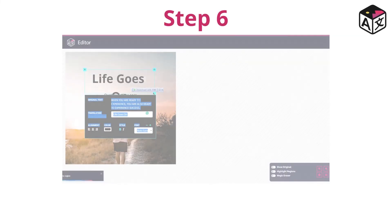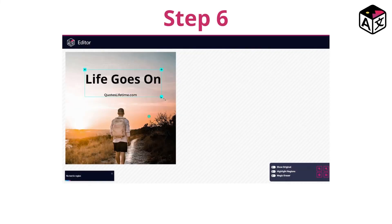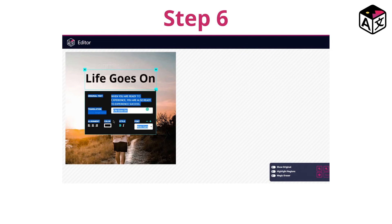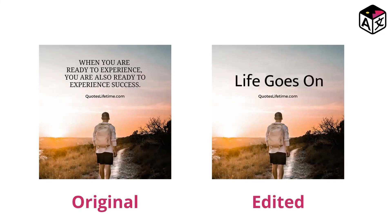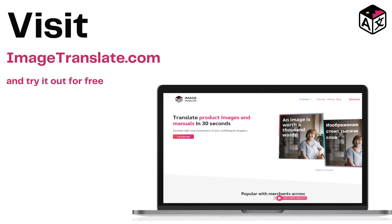Now you can edit the image in the way you want. With Image Translate you can also drag and move the text anywhere in the image and customize the layout and look. The Advanced InPainting AI fixes the background where the previous text was, and it matches the color of the image making sure the look of the image is not changed. Here's how you can use Image Translate to quickly edit text in a picture without Photoshop. Visit ImageTranslate.com to get started.